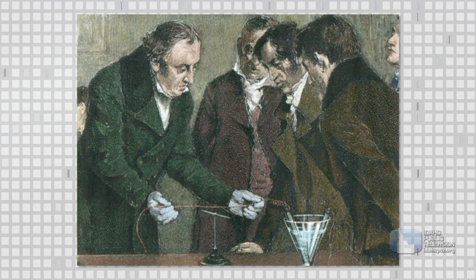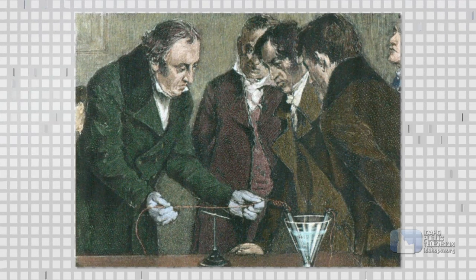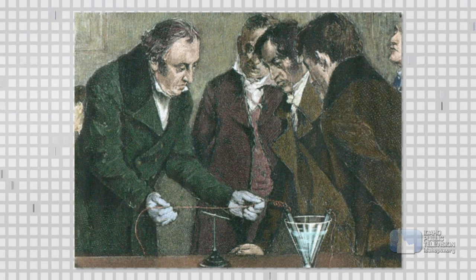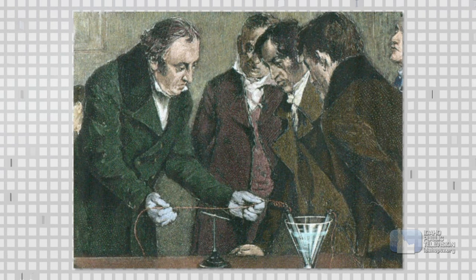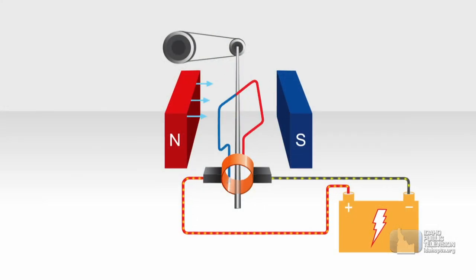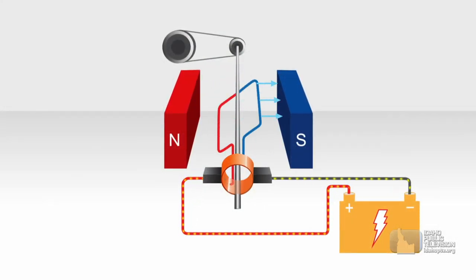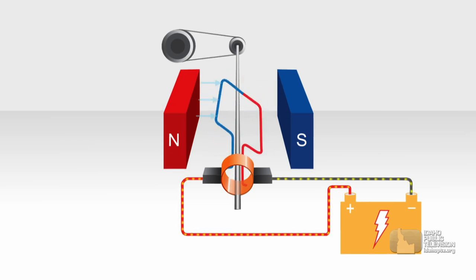In the 1820s, the Danish scientist Hans Ørsted discovered he could create a magnetic field by passing electricity through a wire coil. These electromagnets can push or pull depending upon the direction and force of the electric current.